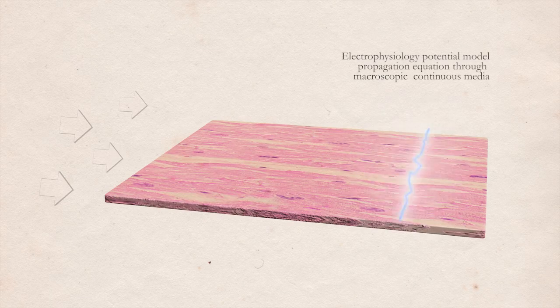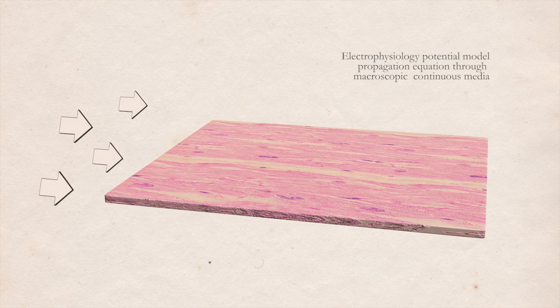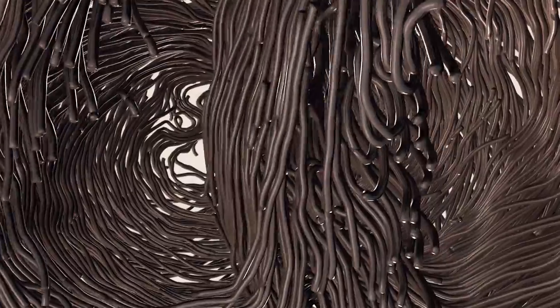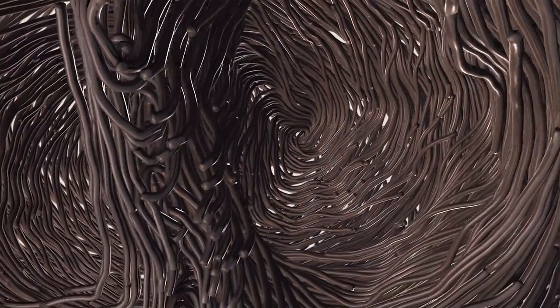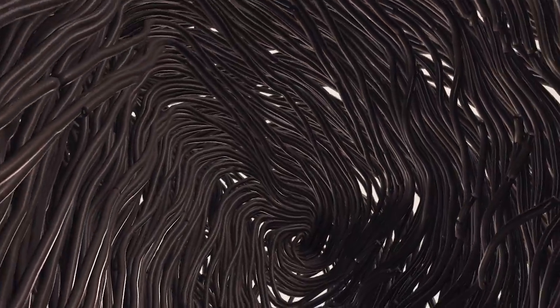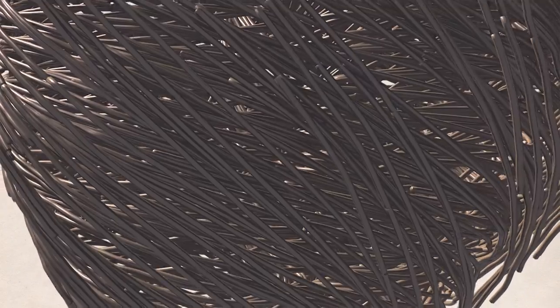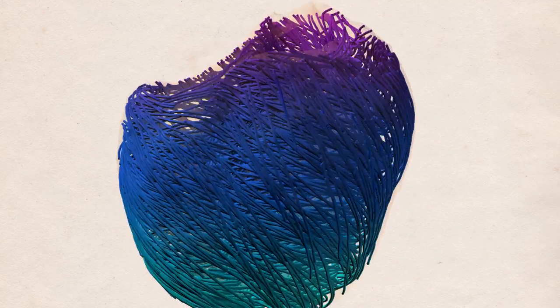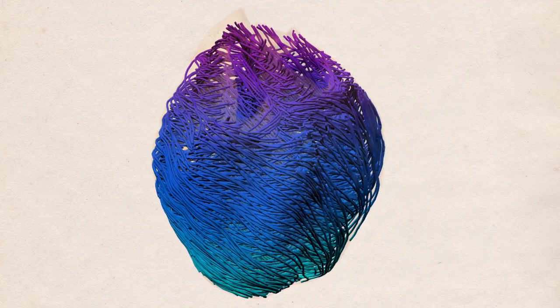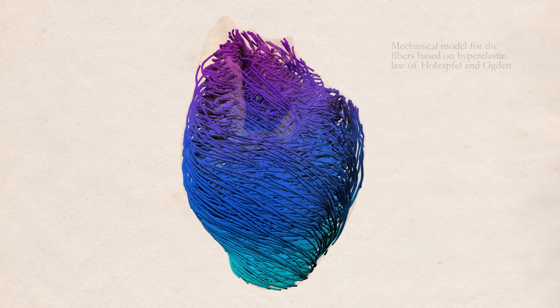Electricity travels much faster along cardiac muscular fibers than across them, so a correct anatomical description of their arrangement is probably the most important element in obtaining a realistic electromechanical model of the heart. Cardiac fibers are specially organized to allow the contraction of the heart cavities in a coordinated, stable and efficient way.